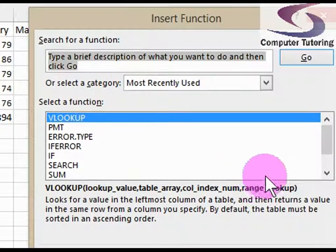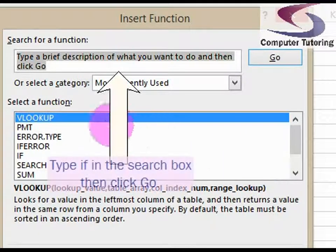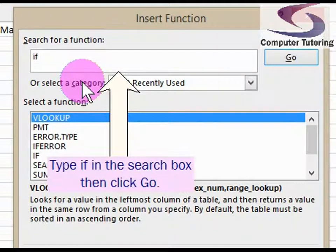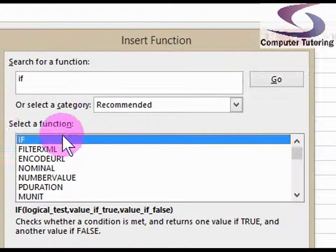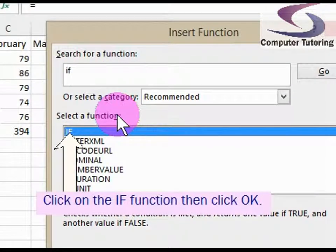This insert function dialog box will allow you to search for the 600 plus functions that come within Excel. It says type a brief description of what you want to do and then click go. So if I type in IF and press enter or click on go, it will tell you all the functions that match your search criteria.